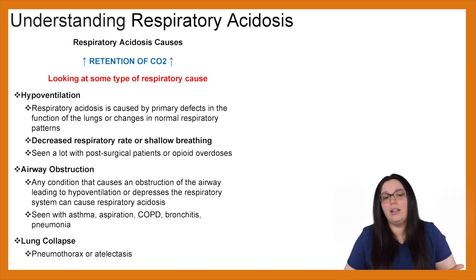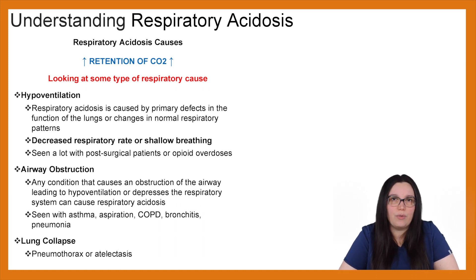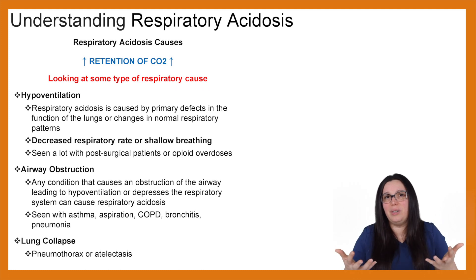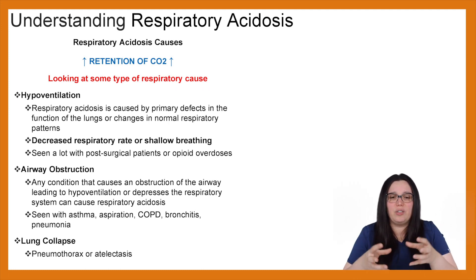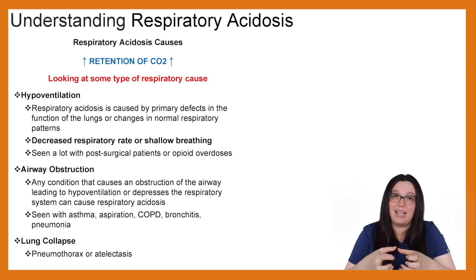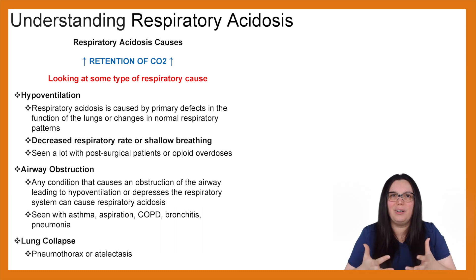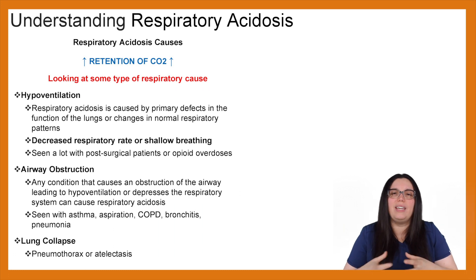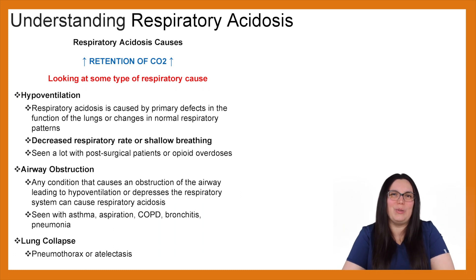And lastly, lung collapse. If we have a pneumothorax or any kind of atelectasis taking place — especially with our acute respiratory distress syndrome patients — we have this massive fluid buildup in the lungs, and it ultimately collapses those alveolar sacs because of the fluid buildup affecting the surfactant component within our lungs. You can see respiratory acidosis with those patients.